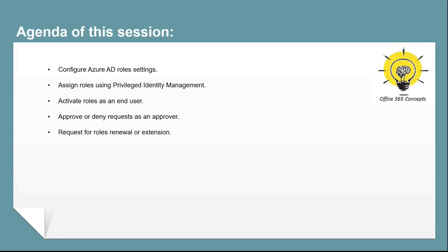In this particular video, we will discuss how to configure and set up Privileged Identity Management. We will discuss how to assign roles to the end users, how an end user activates the role, how an approver approves or rejects the role activation request, and how an end user can ask for an extension when the role assignment is expired.